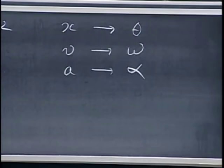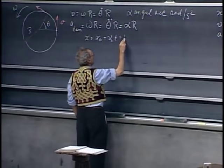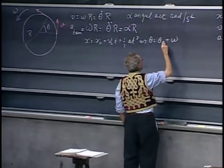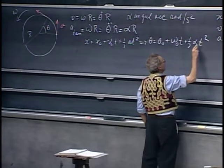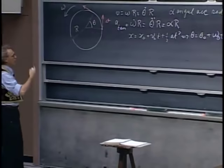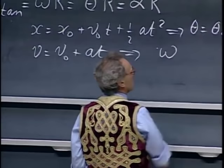The well-known equations can all be used. For instance, x equals x-zero plus v-zero t plus one-half a t-squared simply becomes, for circular motion, theta equals theta-zero plus omega-zero t plus one-half alpha t-squared. Omega-zero is the angular velocity at time t equals zero, and theta-zero is the angle at time t equals zero relative to some reference point. And v equals v-zero plus at becomes omega equals omega-zero plus alpha t.